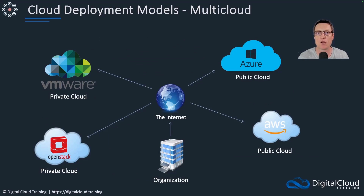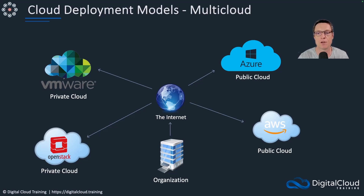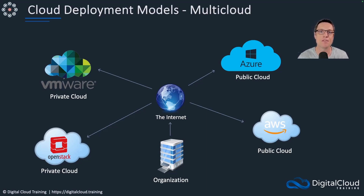Lastly, we have multi-cloud, which is becoming a lot more common. It means a company leverages multiple public and private cloud services. They might prefer to deploy some applications into Azure — perhaps because a development team uses .NET, PowerShell, or prefers Office 365 integration — while other applications make more sense in AWS. They might even have multiple private clouds built on VMware, OpenStack, and other providers, with full connectivity between them. You get the best of different clouds, though it does increase complexity and may impact security and operational efficiency.